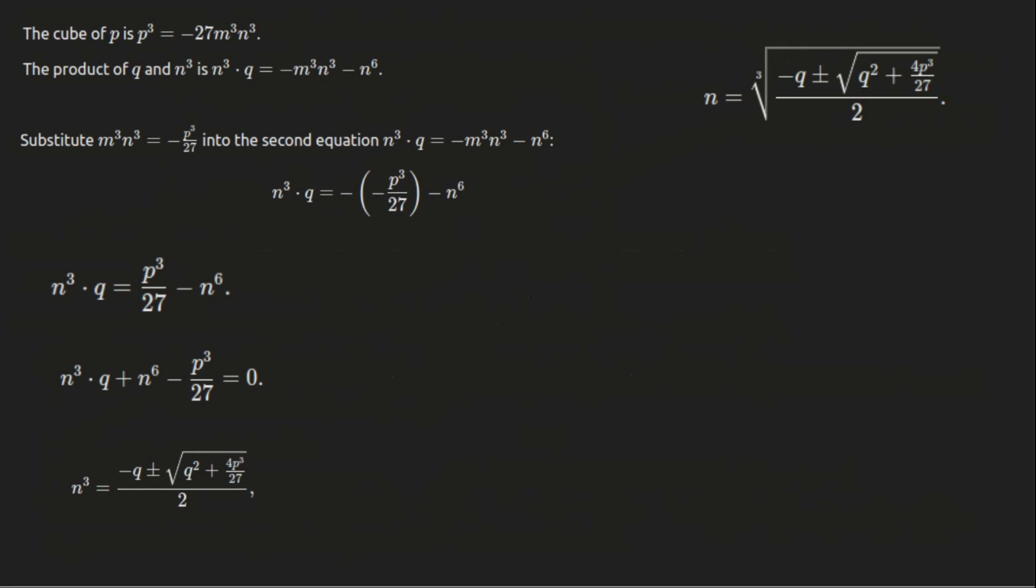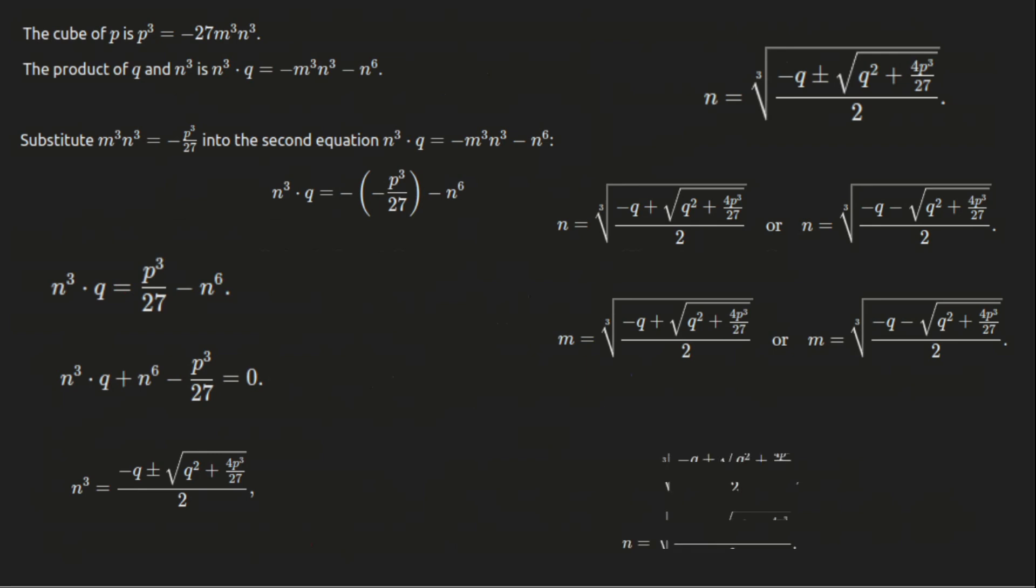Once we have n, we use it to find m. m and n are related symmetrically. And for the solution of n, there will be two possible values for m, one positive and one negative. Now that we have m and n, we can find y by adding m and n together.